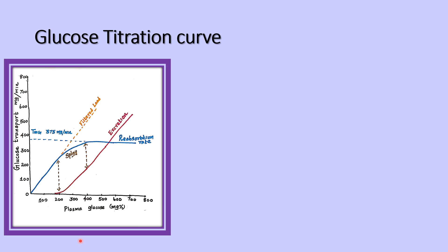The glucose titration curve: the X-axis depicts the plasma glucose level in mg per deciliter or mg per 100 ml. Normal plasma glucose is 100 to 120 mg per 100 ml. The Y-axis depicts the glucose transport through the tubules, in mg per minute.